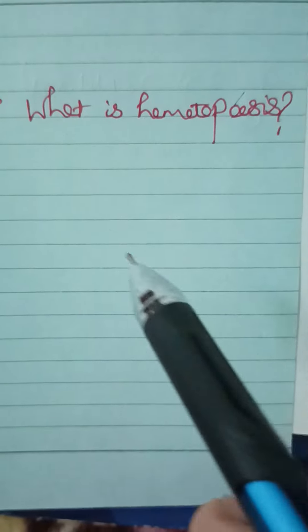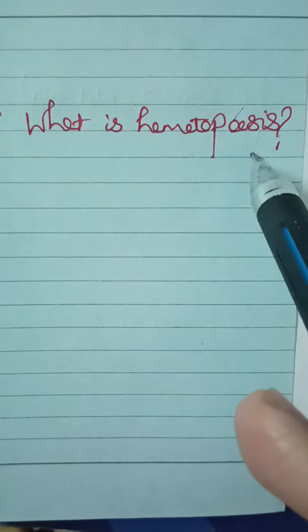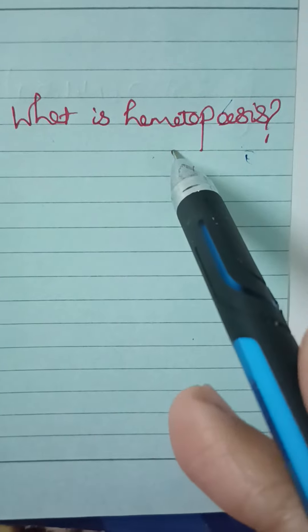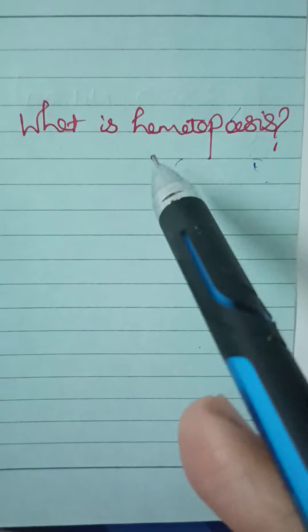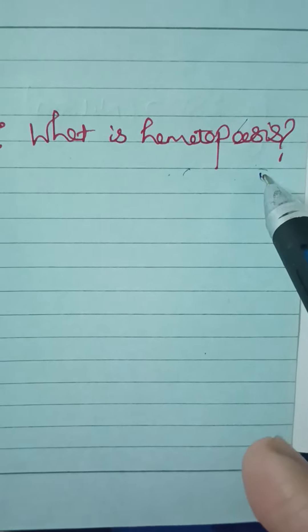Next flashcard: what is hematopoiesis? It's very simple. Poiesis means formation, hemato means blood. So hematopoiesis means the formation of blood cells.